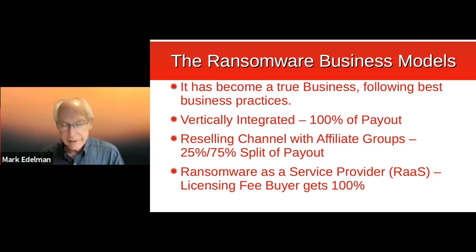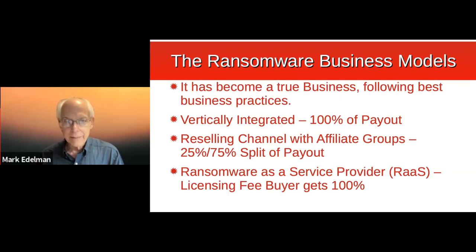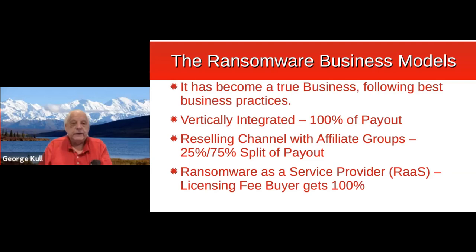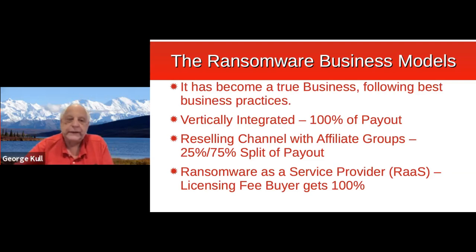An audience member asks about individual protection against ransomware — specifically how anti-malware packages claim to prevent it. The presenter explains that in the infection phase, ransomware typically uses a virus of a specific type, and the software looks for that string of code when scanning your system. If it sees it, it can detect and start getting rid of it, hopefully before the encryption phase begins.